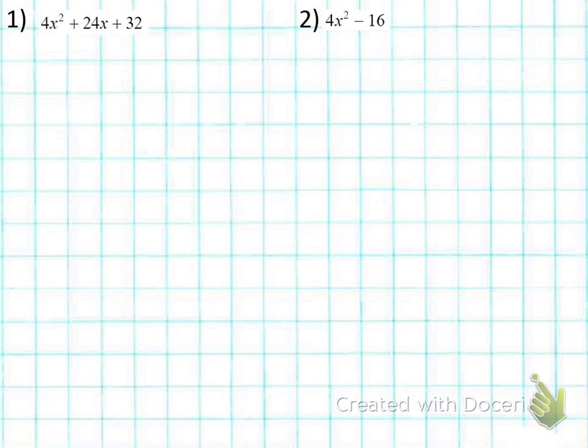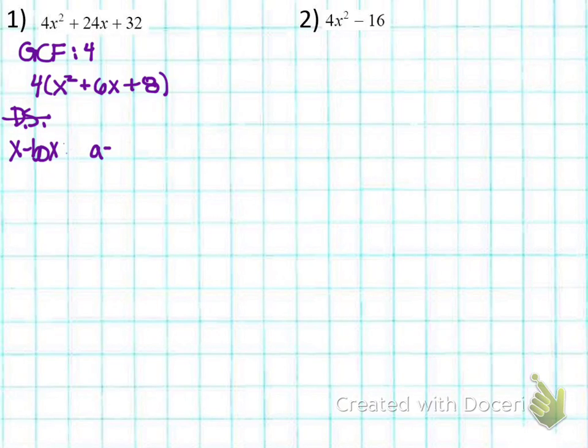For number one, I'm going to start by looking for a GCF. I see that they all have four in common, and that's the biggest number. They don't have any variables in common, so the greatest common factor is just four. When I factor that out, dividing each of those terms by four gives me this. Difference of squares doesn't really make sense here because I have three terms. Moving on to X-box, I see that this is of the correct form—it looks like AX squared plus BX plus C, so I'm going to go ahead and go with X-box.